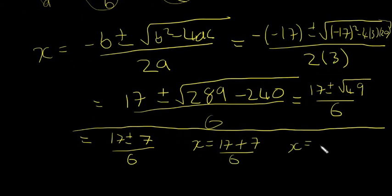And this thing here means you're going to get x is either equal to 17 plus 7 divided by 6, or x is equal to 17 minus 7 divided by 6. So the thing is, you're going to get two different answers with this. That's what the plus or minus means.